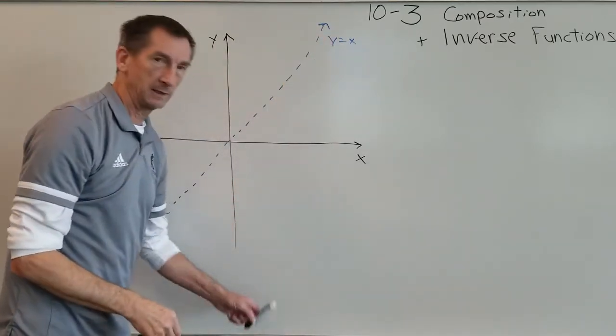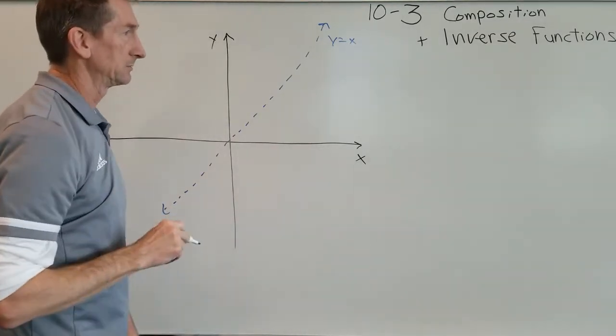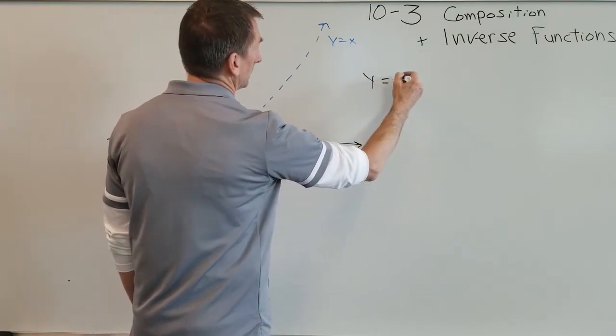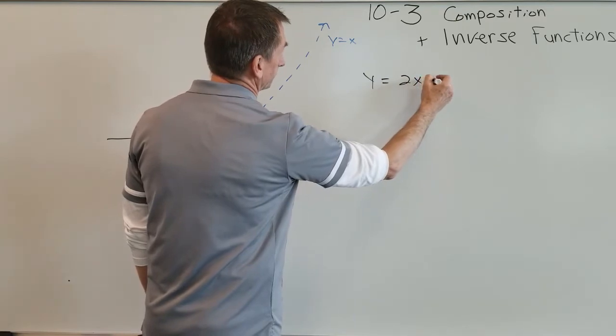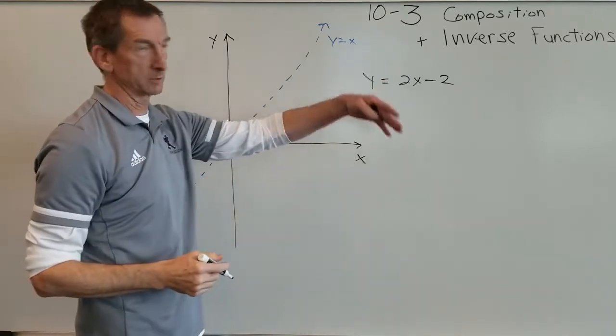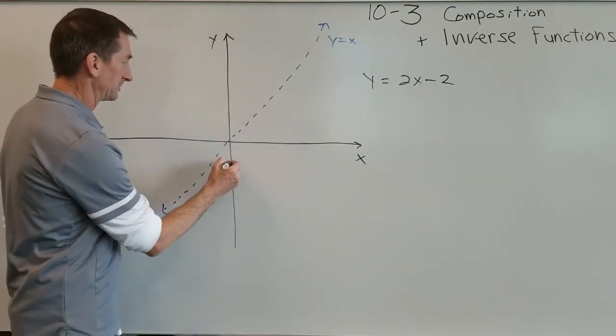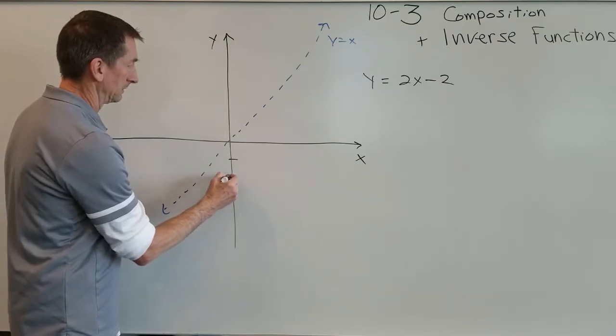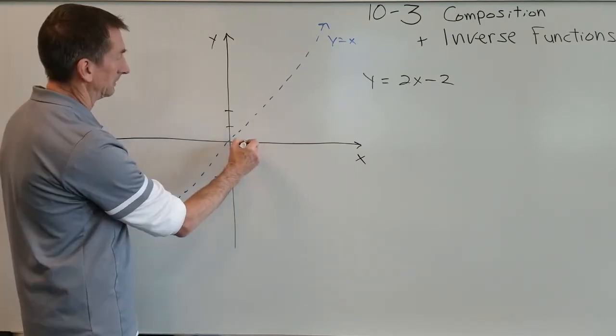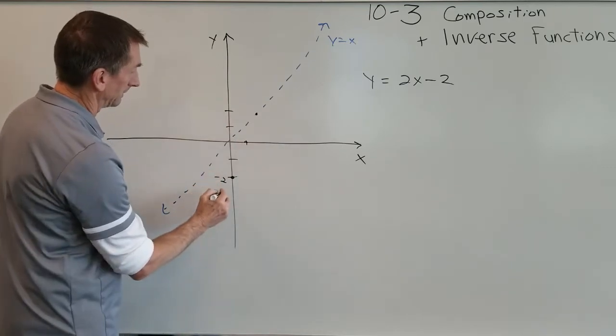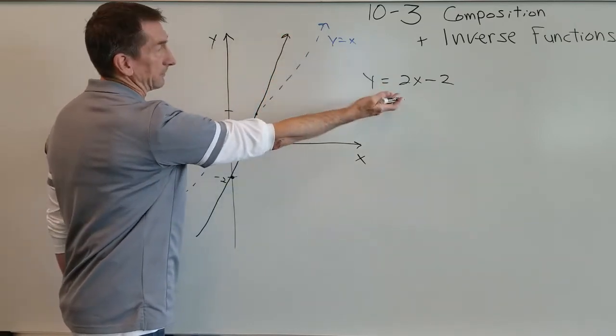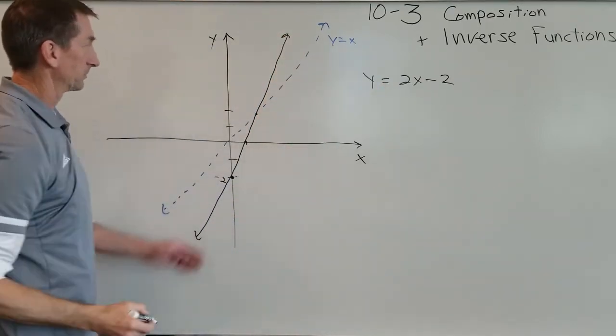and I took a function and just graphed it. Let's use y equals 2x minus 2. I know that's a line, y equals mx plus b. That's a line with a y intercept of negative 2, and it has a slope of 2. So I can go up 2 over 1, up 2 over 1, right there. So now I've got this line, and this line is y equals 2x minus 1.